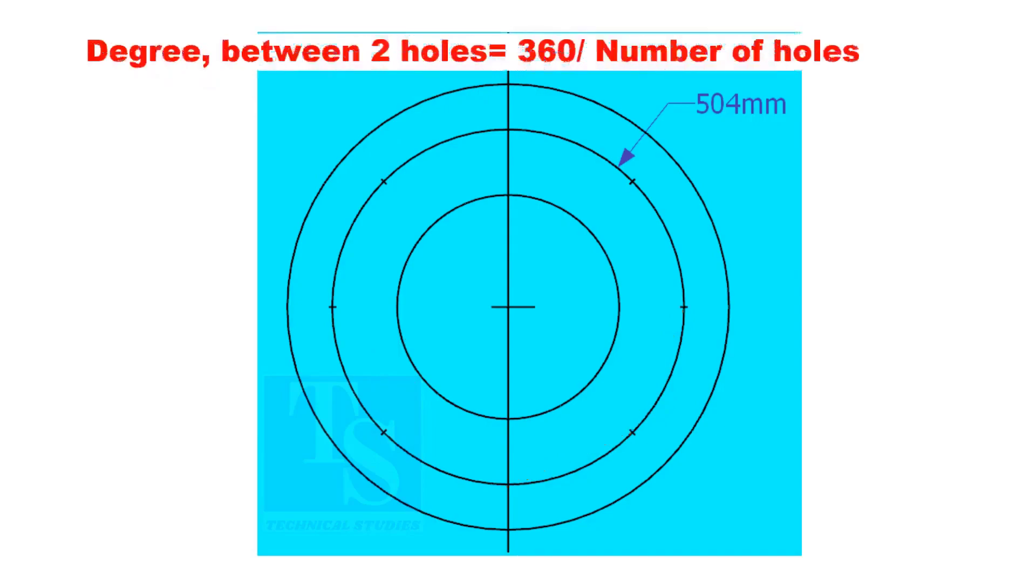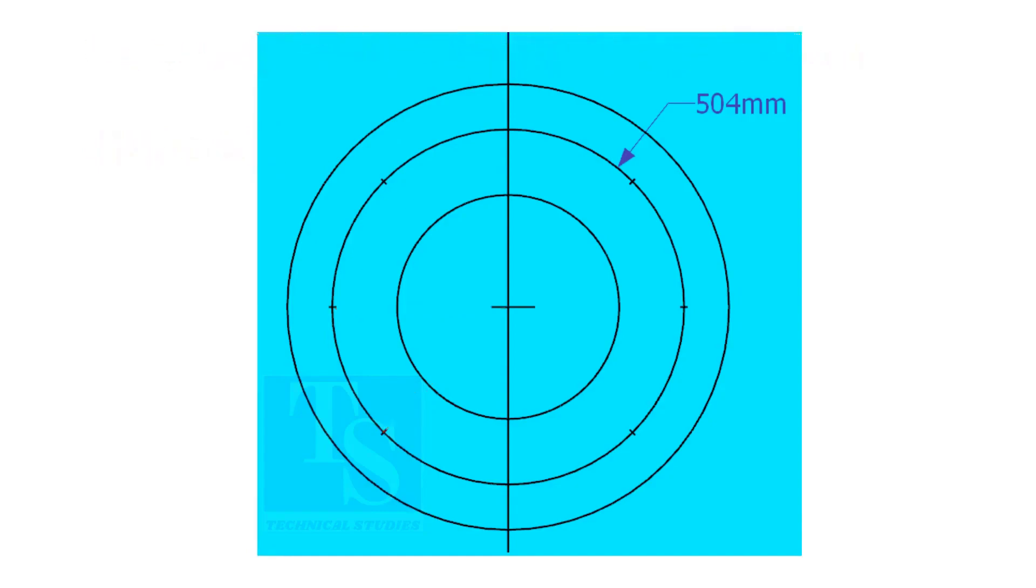If you divide 360 by the number of holes, you will get the angle between two holes. Chord length equals sine 45 divided by 2, multiplied by PCD.